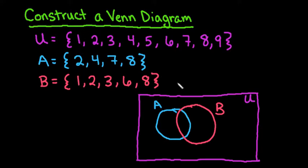So the 1 I can see that it falls in B but not in A so 1 would go here because it's inside both the universal set and set B.